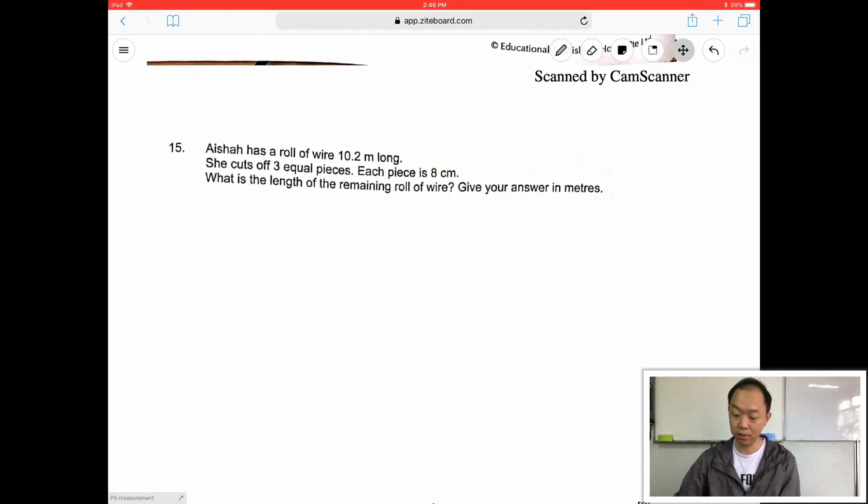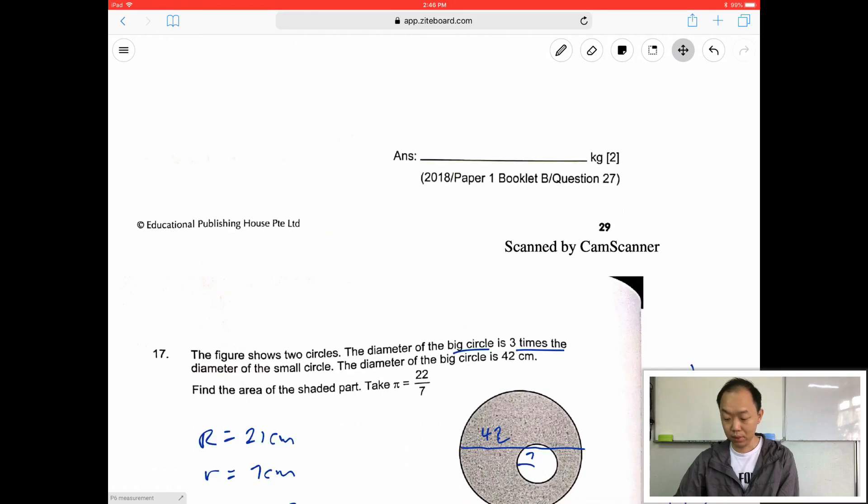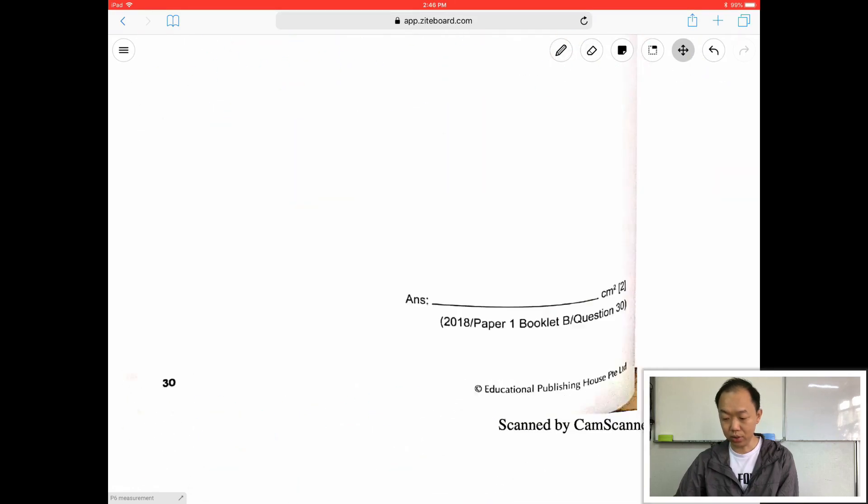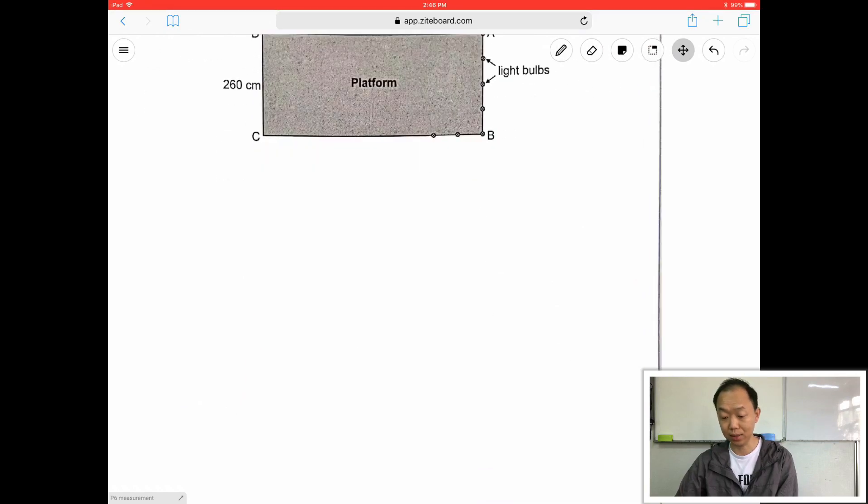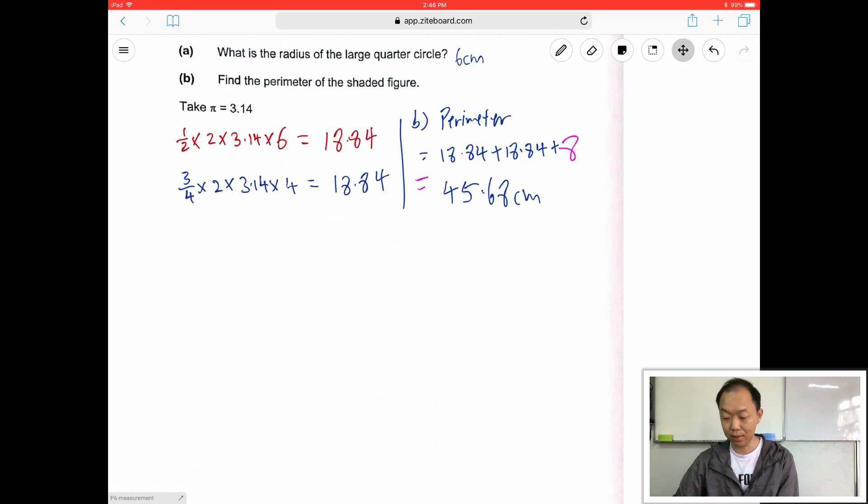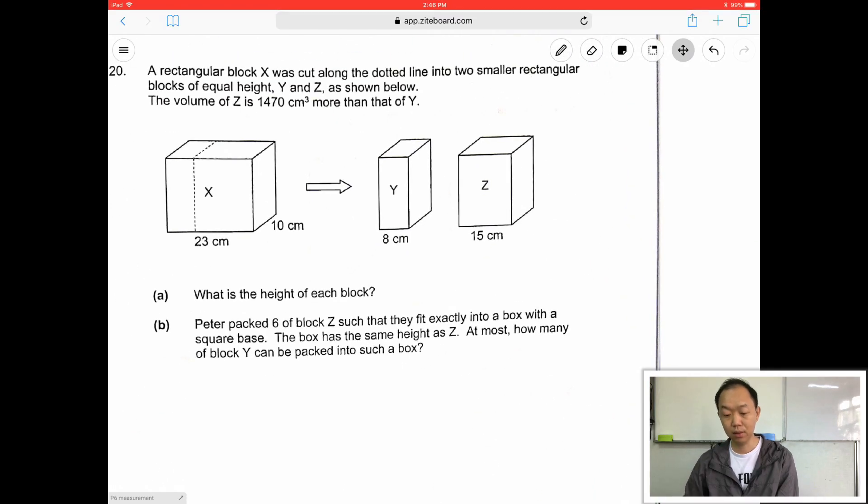So far so good. So volume questions. Skipping to all the volume questions. Let's see what type of volume questions were being asked and what are the concepts that they have tested. So here's another one. A rectangular block cut along the dotted line to smaller blocks as shown. The volume of Z is 1470 more than Y.